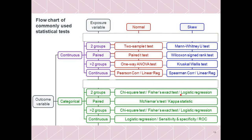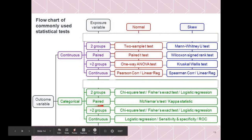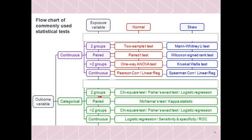Logistic regression can be used when we want to find out the prediction of one variable by the other. If the categories are more than two groups, the tests remain the same: chi-square test, Fisher's exact test, and logistic regression. If the categories are paired — that is, the observations are on the same individual — then we need to use McNemar's test. Kappa statistic is used for agreement.